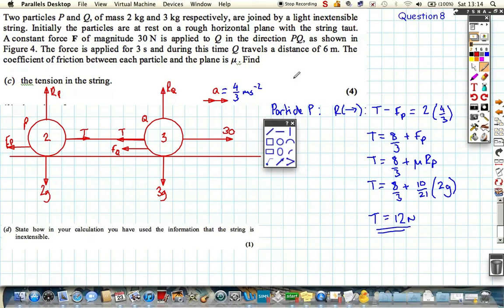We just finished off the fact that the tension, we looked at particle P and we found the tension as 12 Newtons, and we could have looked at particle Q to find that 12 Newtons as well, but there was a slightly more complicated because there was three forces, the 30, the T, and the friction, as opposed to just the two forces at particle P.